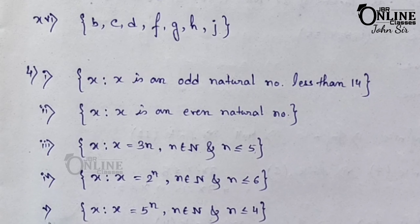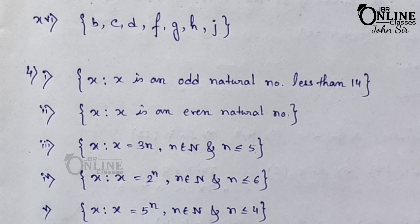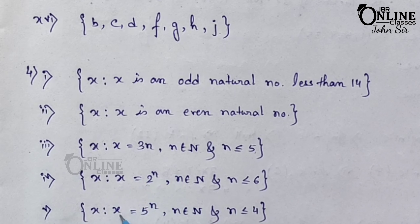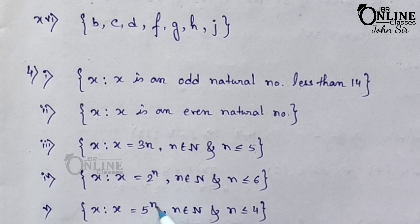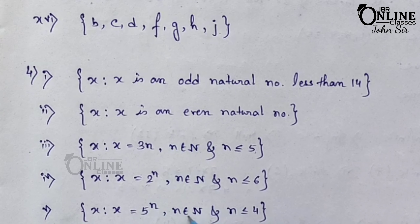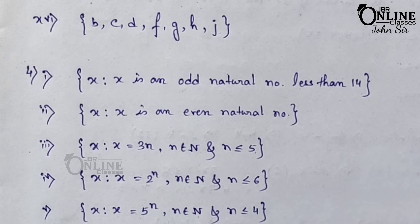Number 5: {5, 25, 125, 625}. Same pattern as sum number 4. Write as: {x | x = 5^n, n belongs to N, n ≤ 4}.